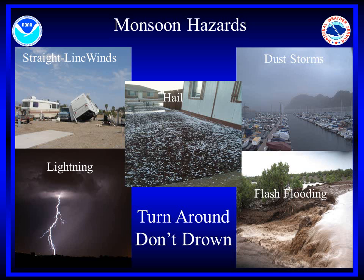Although the monsoon brings welcome rains and relief from summer heat, the thunderstorms that come with the monsoon bring their own hazards. Severe flash flooding, deadly lightning, dust storms, hail, and damaging straight line winds all can occur with the summer monsoon. This can be one of the most dangerous times of the year weather-wise in the desert southwest. So before and during the season, it is a very good idea to review safety tips and be prepared.